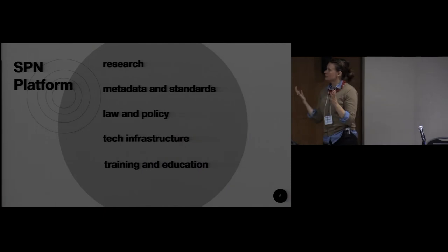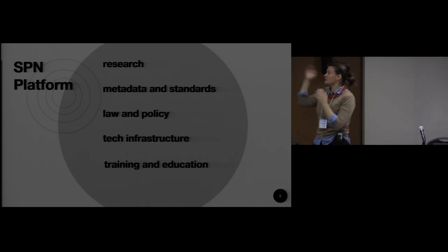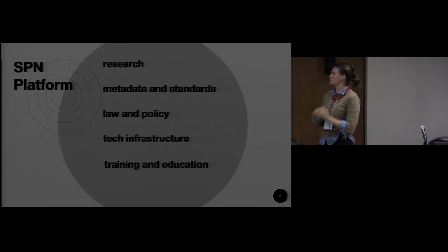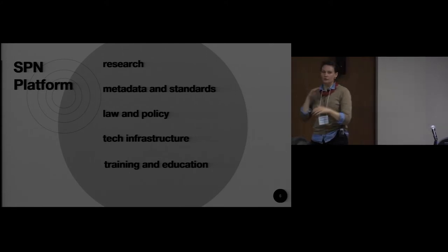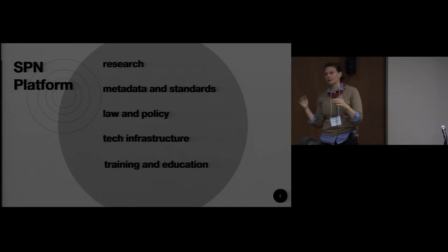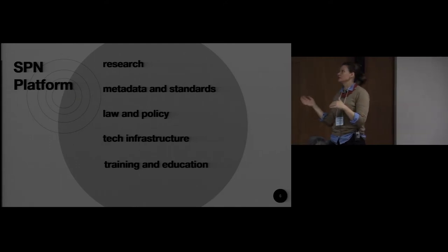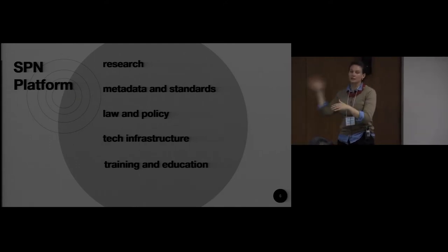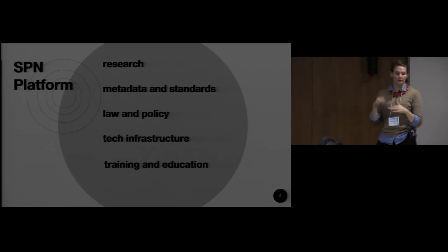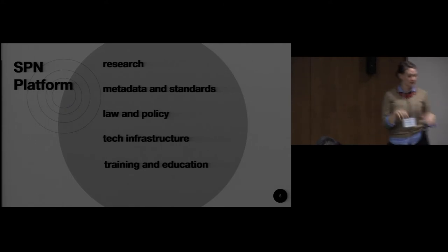SPIN as a platform has these working groups: research, metadata standards, law and policy, tech infrastructure, and training and education. These are all interrelated. There are various standing meetings of each of the groups and then there's an all-hands-on-deck meeting. These are all iterative and interrelated.